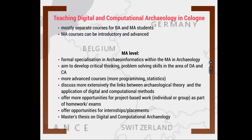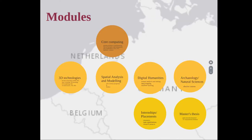There is also a whole module for internships — one month of training in museums or other organizations — and the possibility of a master's thesis in Digital and Computational Archaeology. To give you an idea of what a two-year master program would include: most of these modules are already offered as part of the specialization. We have core computing modules with introduction and advanced courses, modules in 3D technologies and spatial analysis and modeling, digital humanities, elective courses in archaeology and natural sciences, a module for internship placements, and a master thesis. The core computing module covers introduction to programming, web technologies, data management, visualization, CAD, GIS, databases, and statistics with R.